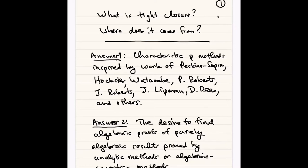And finally, the third answer is one I learned from Mel Hochster also, and I already mentioned it. Whenever you have a germ of an idea that proves something — a method, a lemma, whatever it is — conceptualize it. What that means is make a definition if you must, but take that nugget of an idea and make a concept of it and start studying that concept. And it's amazing how far that will go sometimes.